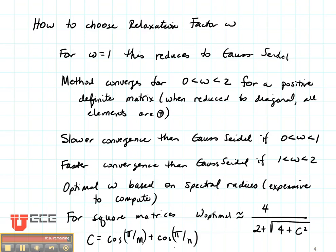Optimal omega is based on the spectral radius, but we can approximate it using the method shown here.